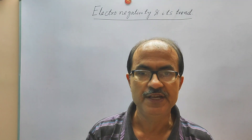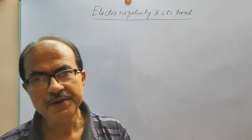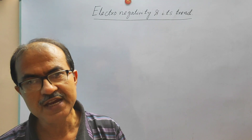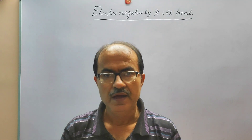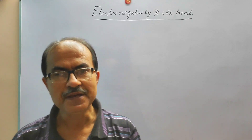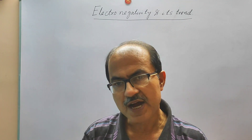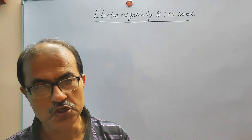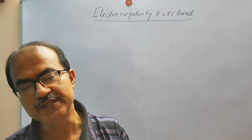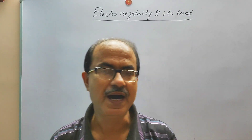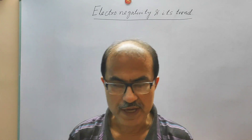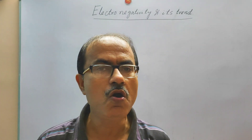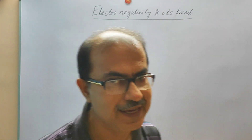Now we are going to discuss what electronegativity basically is. Electronegativity of the element is basically the measurement of the capacity of the atoms of the element to attract the shared pair of electrons into itself in the compound. So we can write the definition of electronegativity in this way.